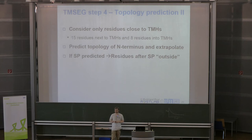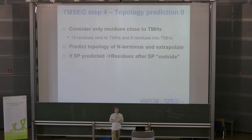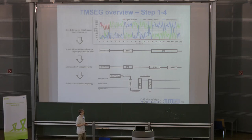From this, I predict the topology of the N-terminal residue and extrapolate, switching sides after each transmembrane helix. If a signal peptide is predicted, I skip this step and say everything after the signal peptide is extracellular — which is true for almost every protein with a signal peptide. After all four steps we have the final prediction, including orientation of the protein in the membrane.